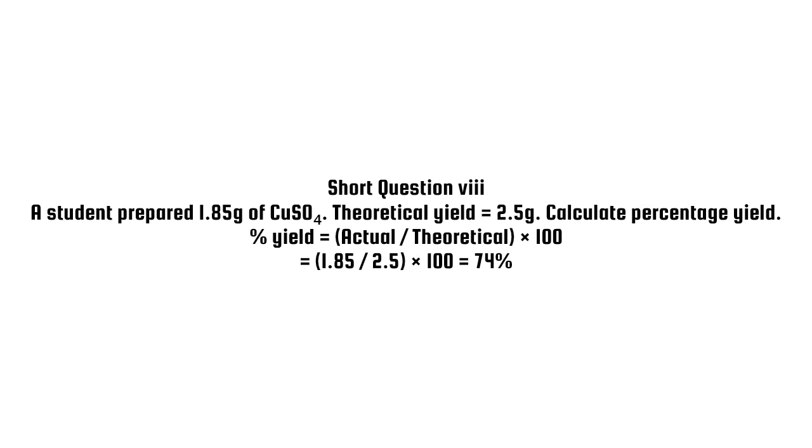Short question 8. A student prepared 1.85G of CuSO4. Theoretical yield equals 2.5G. Calculate percentage yield. Equals 1.85 divided by 2.5 times 100 equals 74 percent.